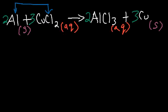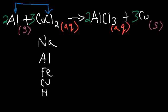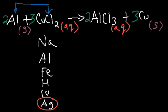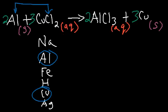Before we write the net ionic equation, how can we determine if this reaction will work? Is aluminum strong enough to displace copper out of the solution? There's something called the activity series. On it you'll see sodium at the top, then aluminum, Fe, hydrogen, copper, and Ag. The metals at the top are very reactive; metals at the bottom like silver or gold are less reactive. Because aluminum is higher than copper on the activity series, aluminum is more reactive, so it's strong enough to displace copper. This reaction will work.